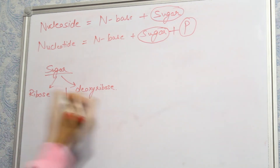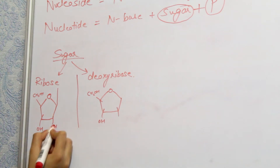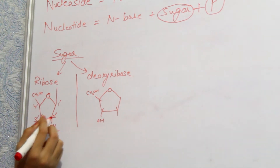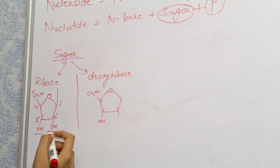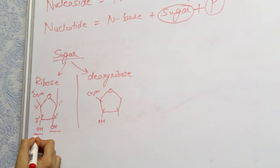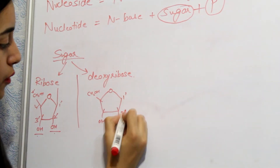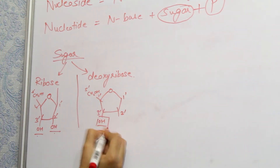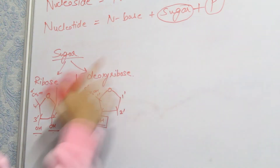The sugar can be two types: ribose or deoxyribose. In ribose sugar there will be two OH groups at the 2' and 3' carbons. In deoxyribose, there will be an OH group only on the 3' carbon. This is the key difference between ribose sugar and deoxyribose sugar.